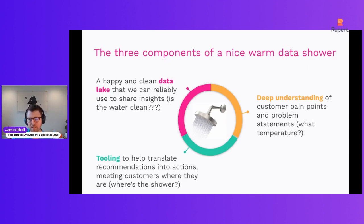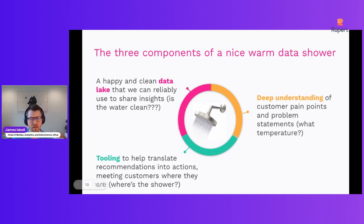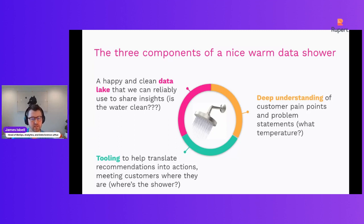The next piece we really need to have a nice warm data shower is a deep understanding of our customer pain points and problem statements. You can think of this as: what temperature should the water be? What time should they take a shower — after they go to the gym in the morning or before bed? We need to really understand our customers, meet them where they are, in order to drive value for them and give them what they need. The last piece is tooling — we need the right kind of tooling to help translate and distribute the raw data from the data lake downstream, hopefully meeting customers where they are.